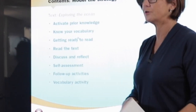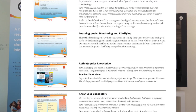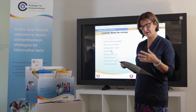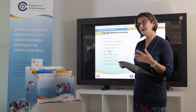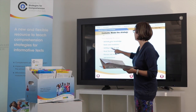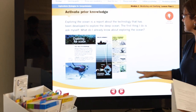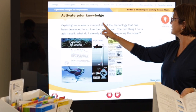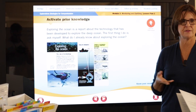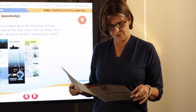The first thing we do is activate prior knowledge, setting students up for a discussion task. They may do some note-taking and feed back to you as the teacher to share what they know about what they're going to read — the content and the text type. On the digital version, clicking the screen shows the task and what you would say to students: telling them they're going to read a report about technology and the deep sea ocean, and asking them what they know about it.